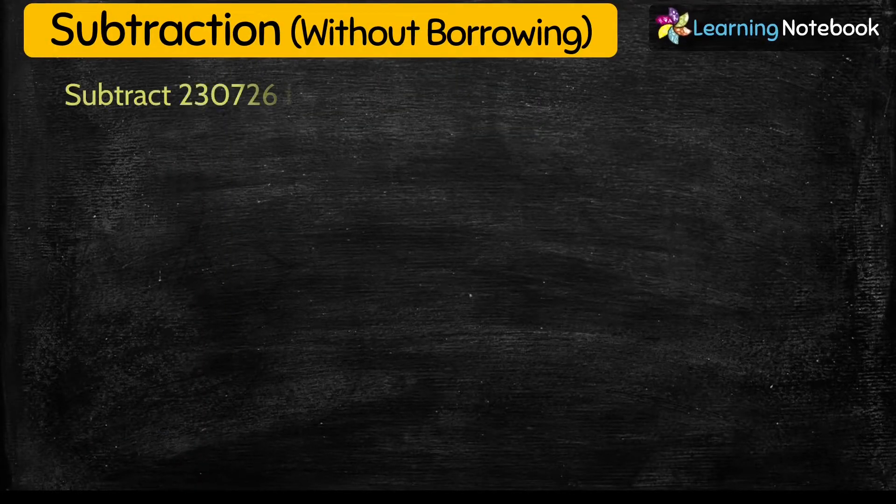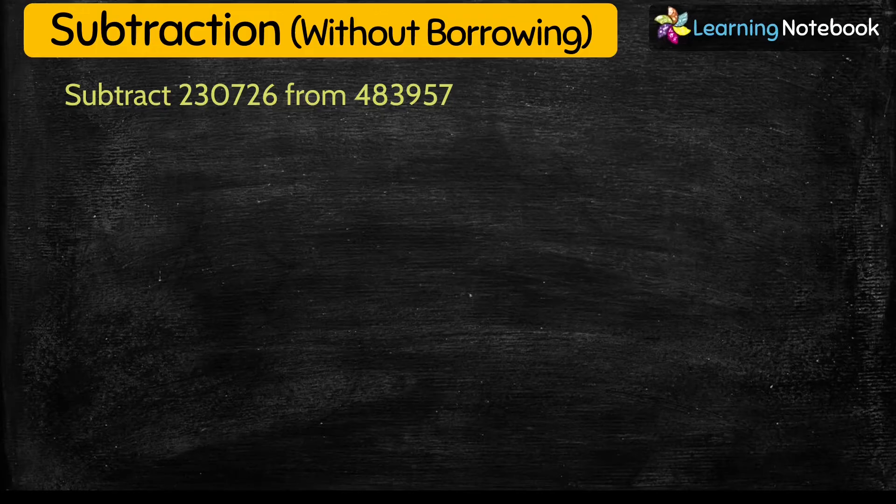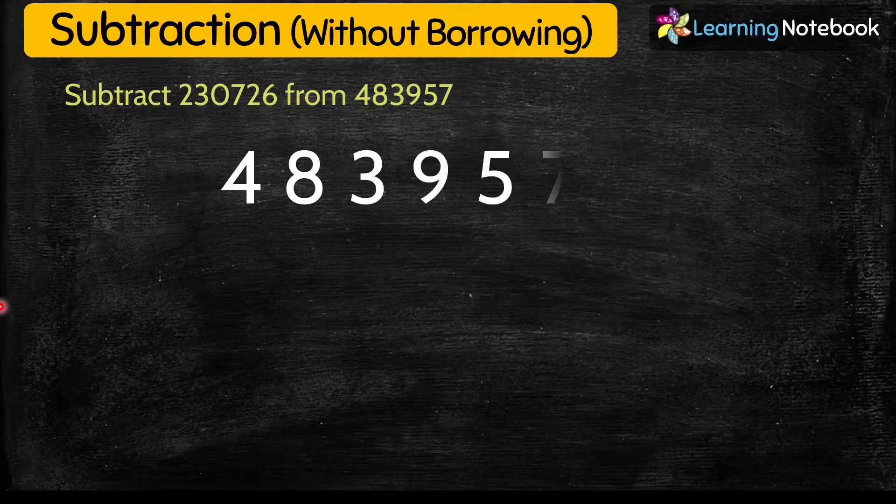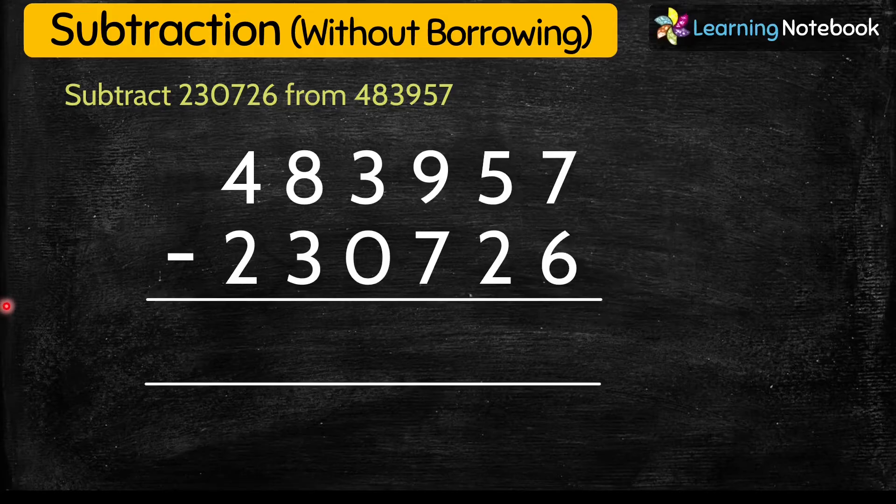Question is subtract 230726 from 483957. To subtract these two numbers, first write them in columns as shown here. Then start subtracting them from one's place.